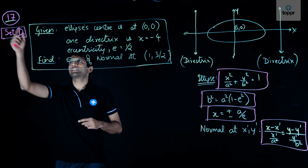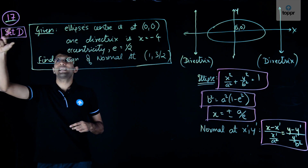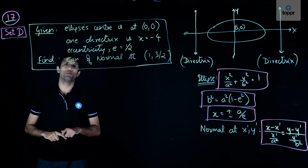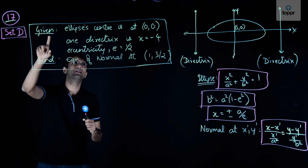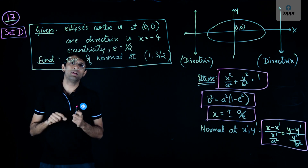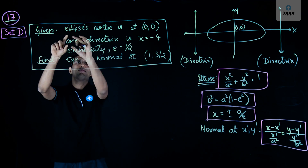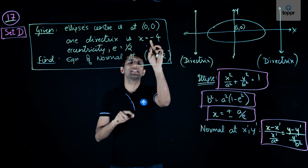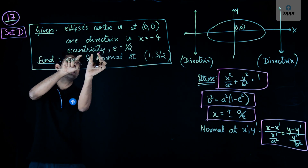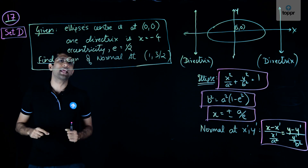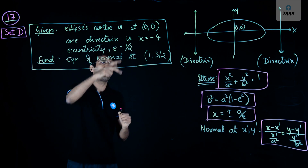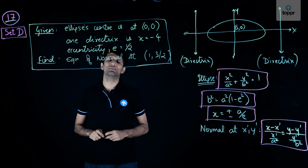We are looking at question number 17 of set D of the JEE Mains 2017 paper. The question says we have been given an ellipse whose center is at (0,0), that is the origin. The equation of one directrix is x equals minus 4, the eccentricity E is equal to half, and we have to find the equation of the normal at a given point.